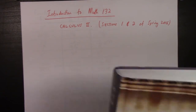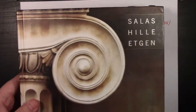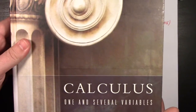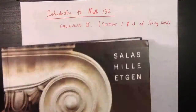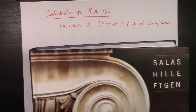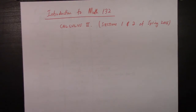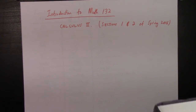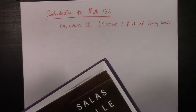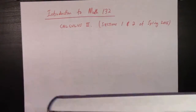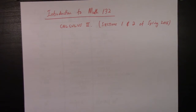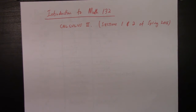First order of business: we're using this book. It's Calculus 1 and Several Variables by Salas, Hille, and Etgen. Anyway, that's the book. You don't have to have this exact copy of it — you just have to have some way of looking at it. I don't care if you have an e-book, whatever. I will not be using the Wiley Plus stuff, so don't worry about that.